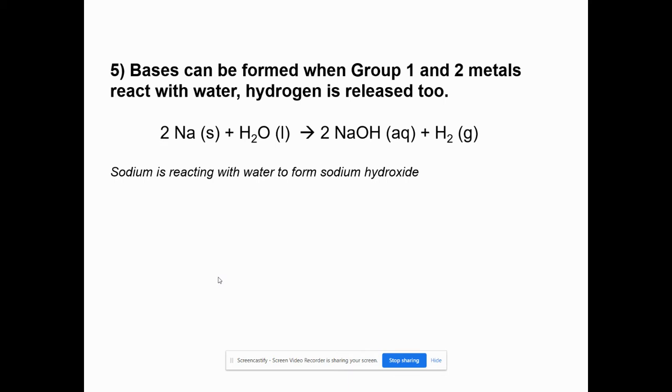Also bases can be found or can be formed when group one or group two metals react with water. So if you remember our group two experiment, sodium is a group one. If I threw sodium in water, it would explode. However, on the positive side, it would give me NaOH and hydrogen gas. And then the hydrogen gas would explode. So that's why we do group two metals in lab, not group one.